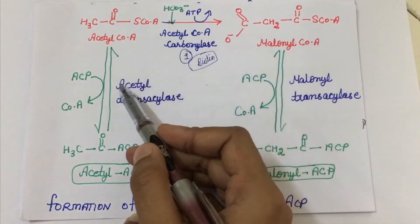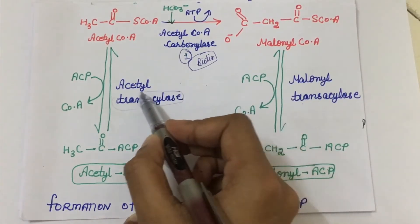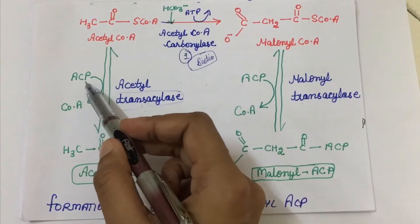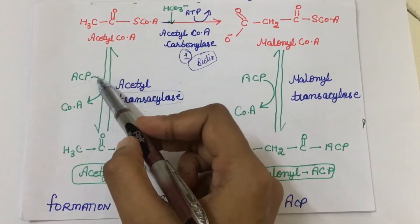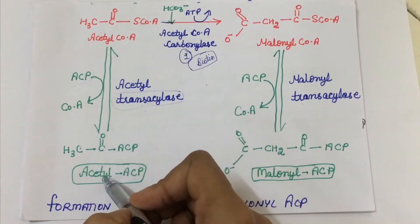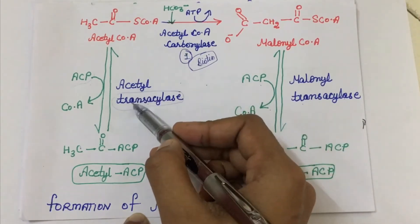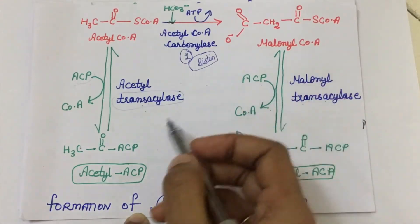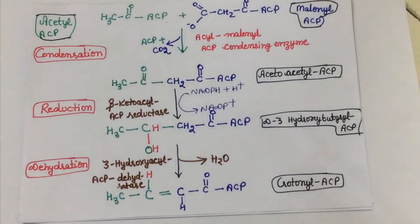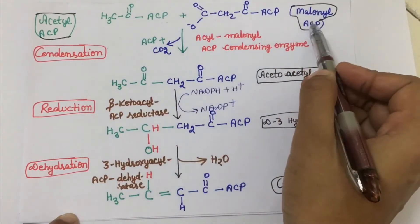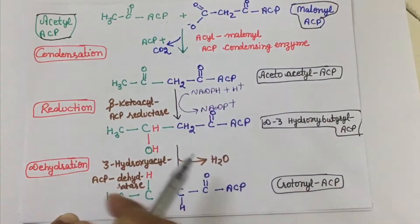After carboxylation, acetyl coenzyme A and malonyl coenzyme A are acted upon by acetyl transacylase and malonyl transacylase respectively. These transacylase enzymes help in the transfer of the acyl group from one molecule to another. The CoA part gets removed and ACP gets attached, forming acetyl-ACP and malonyl-ACP.